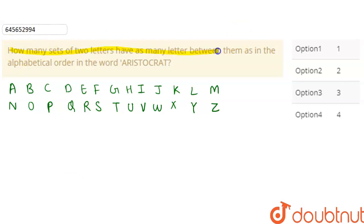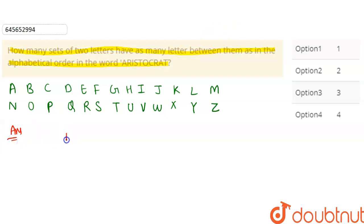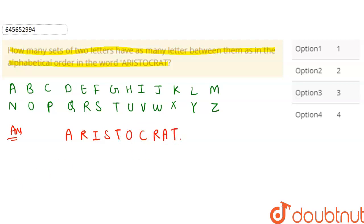Hello everyone. The question is: how many sets of two letters have as many letters between them as in the alphabet, in the word A-R-I-S-T-O-C-R-A-T? Okay, so let's write out A-R-I-S-T-O-C-R-A-T.